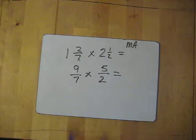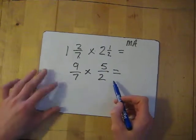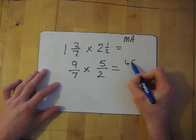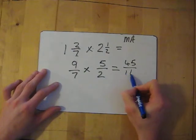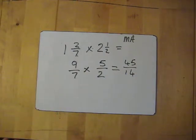And then all we do is multiply the top 2 numbers, multiply the bottom 2. It's that easy. 9 times 5 is 45. 7 times 2 is 14. And that is it.